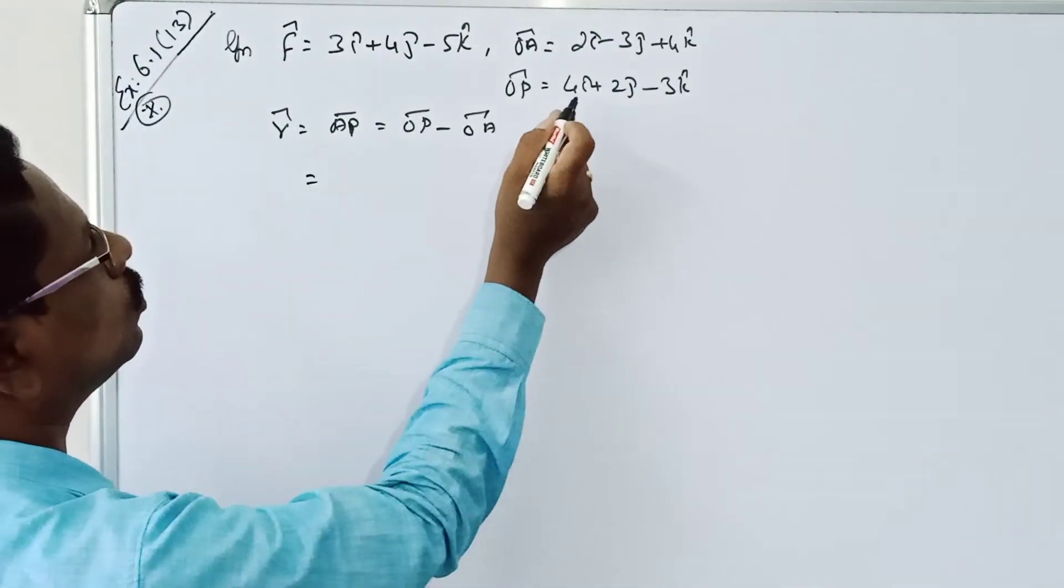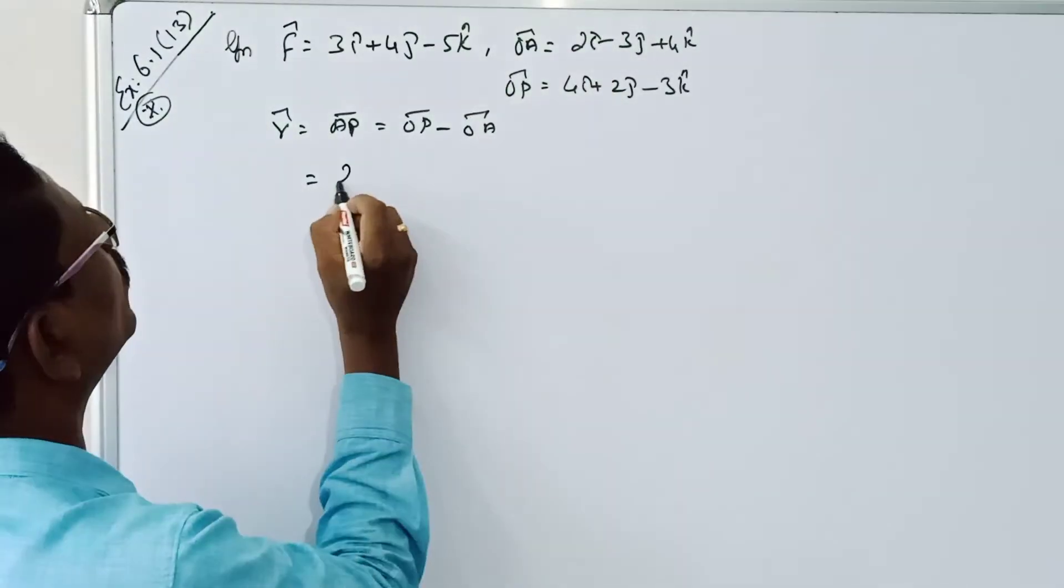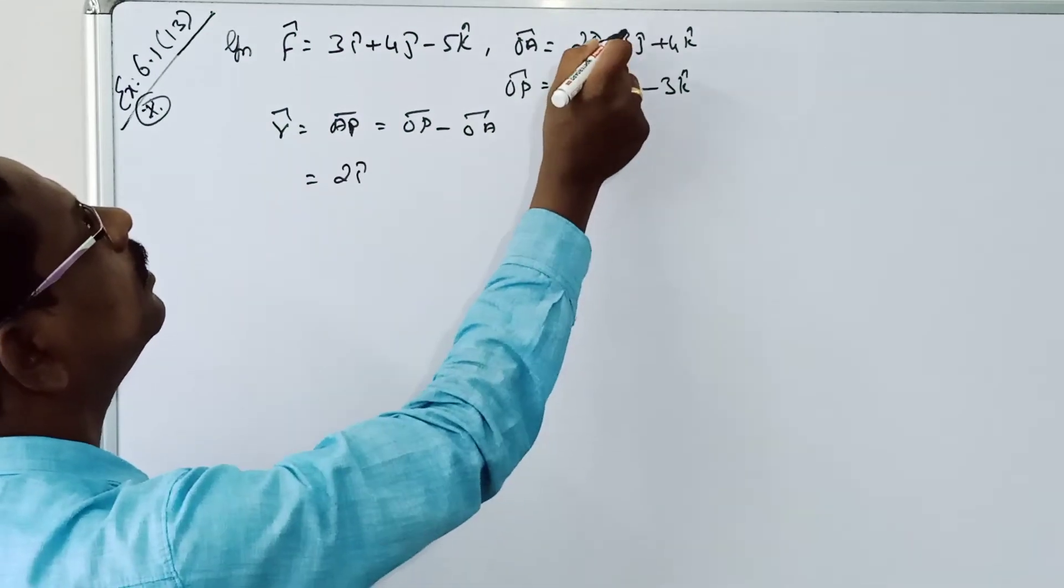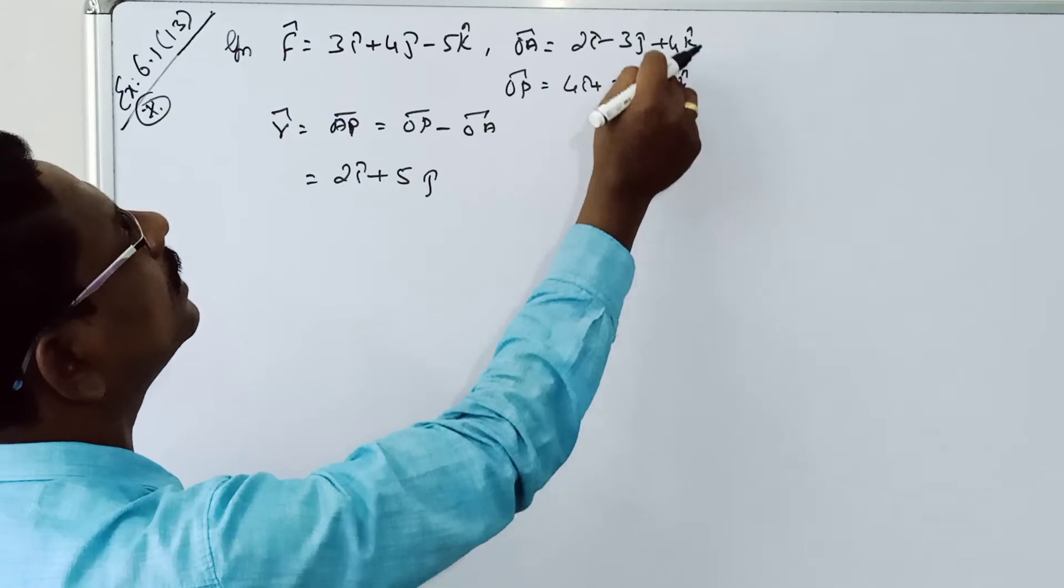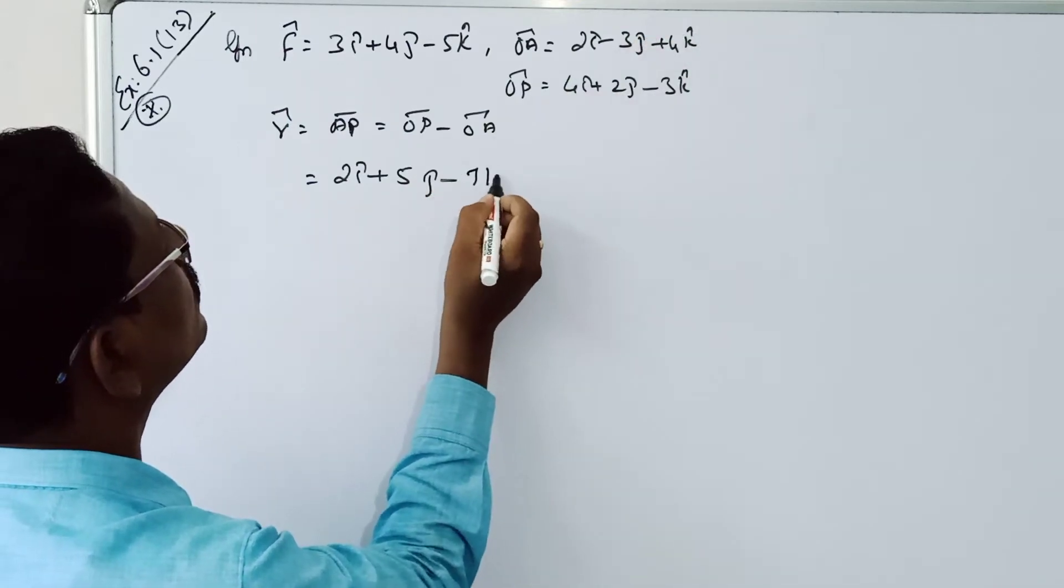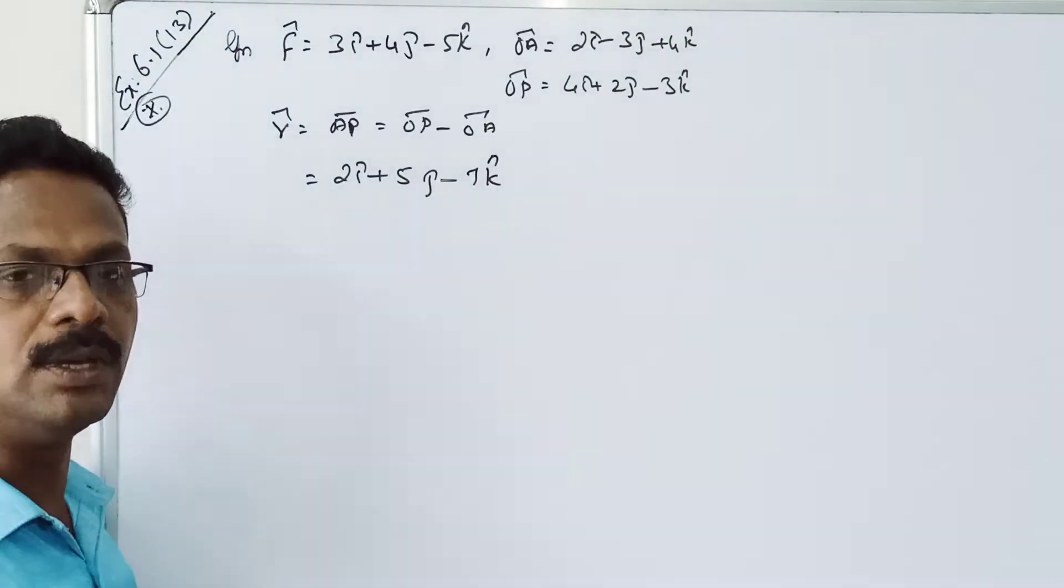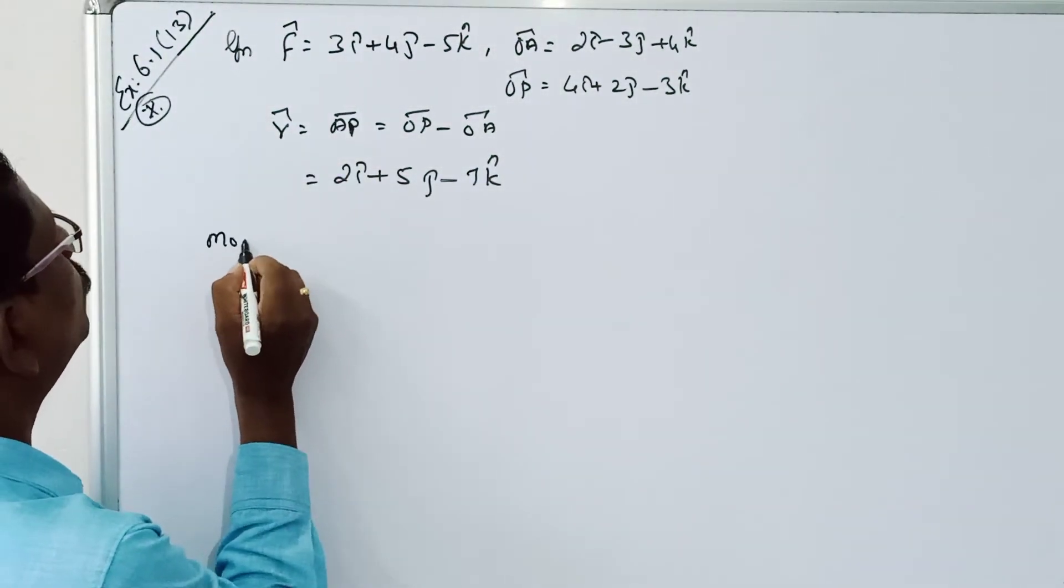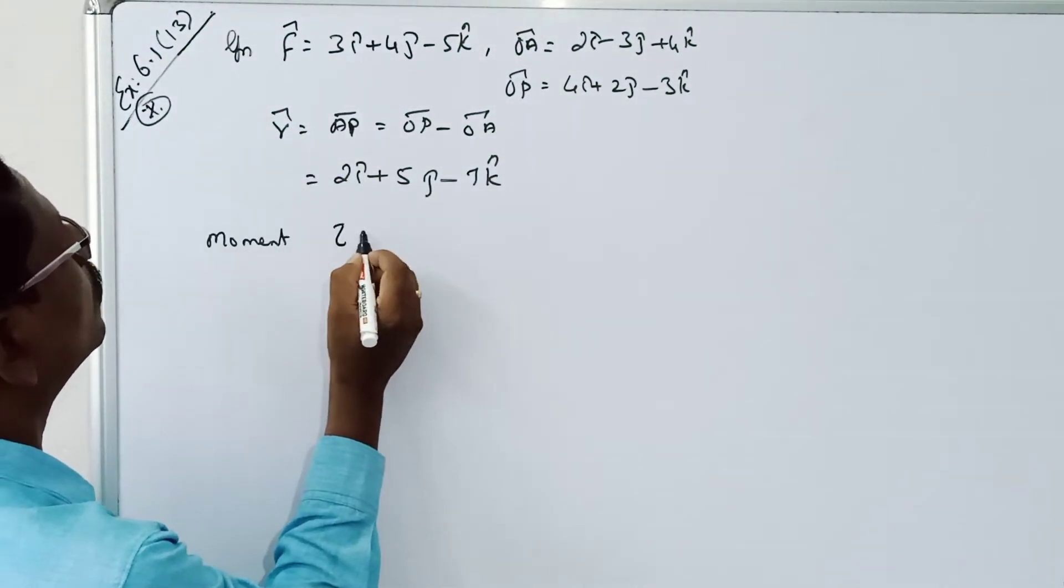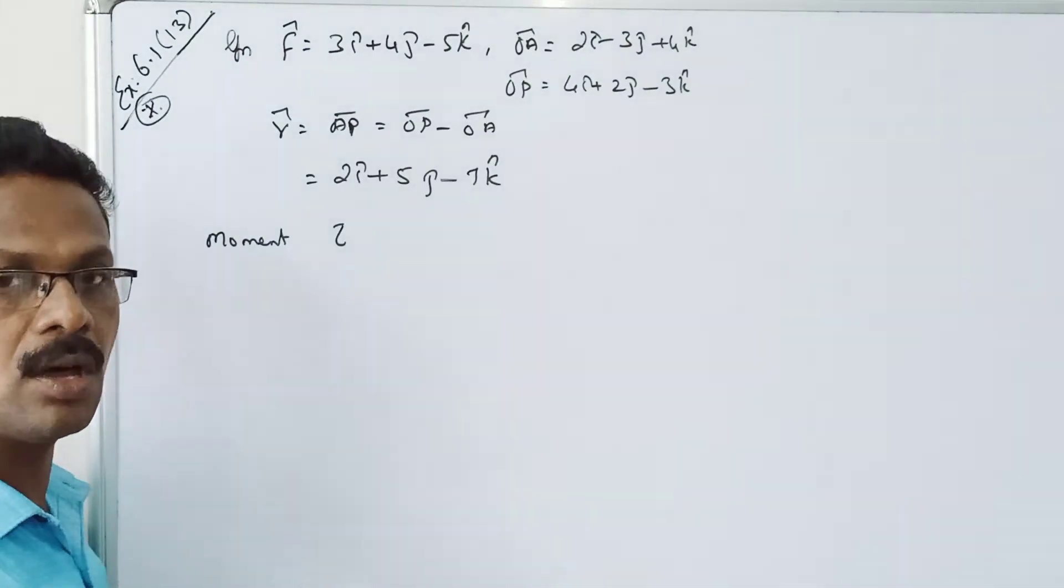That is equal to 4i minus 2i, 2j minus of minus 5j, minus 3k minus 4k, minus 7k will be minus 8. Now, moments are torque. Moment are torque, okay?